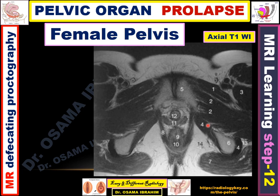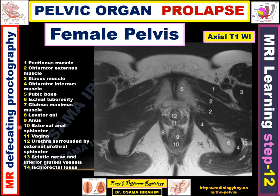The external muscle is the obturator externus muscle, represented by number 2, and the most superficial muscle is the pectineus muscle in the symphysis pubis region. This is the region of the sciatic nerve and the inferior gluteal vessels. The gluteus maximus muscle appears most posteriorly. The anterior-lateral structure is the iliacus muscle. The fat between the ischium and the rectum and anus is the ischio-anal or ischio-rectal fat.